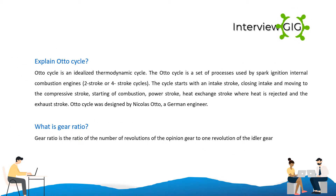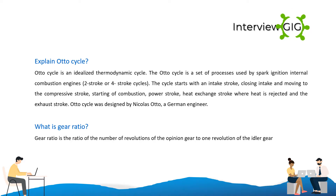Explain the Otto cycle. The Otto cycle is an idealized thermodynamic cycle used by spark ignition internal combustion engines in two-stroke or four-stroke configurations. The cycle starts with an intake stroke, closing the intake and moving to the compression stroke, starting of combustion, power stroke, heat exchange stroke where heat is rejected, and the exhaust stroke. The Otto cycle was designed by Nicholas Otto, a German engineer.